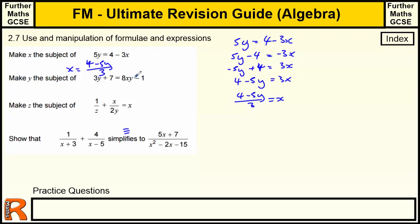Making y the subject. Now we've got y appearing in two places, so this is a classic one where we've got to factorise at some point. We need to get y into one place. So we've got 3y plus 7 equals 8xy minus 1. We still start the same—we get the y's together. So we've got 3y, I'm going to take away the 8xy over to this side, still got the plus 7, that equals minus 1. Now I'm going to take away the 7.